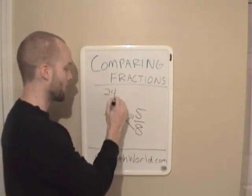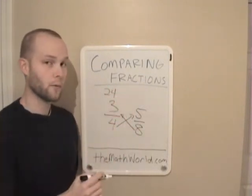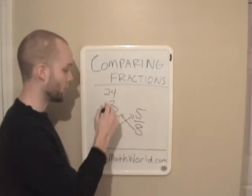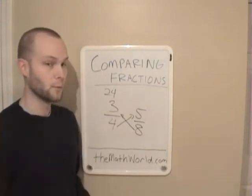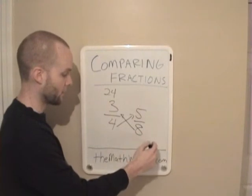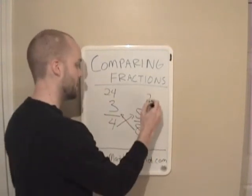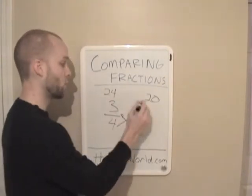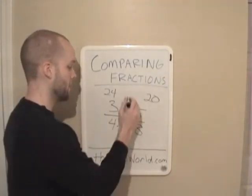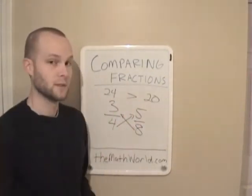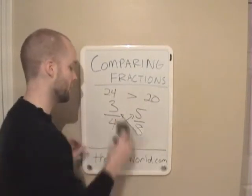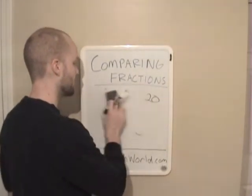So eight times three is 24, and eight times three is going to go over the three. So the 24 coincides with the numerator. Make sure that you don't put the 24 down here. And four times five is 20. So since 24 is greater than 20, then three-fourths is greater than five-eighths. And we'll take a look at a few more examples here.